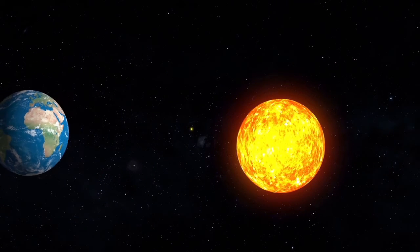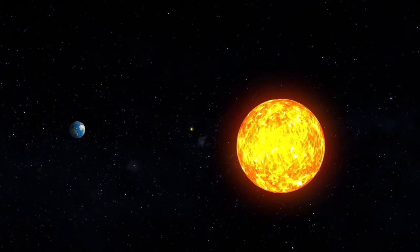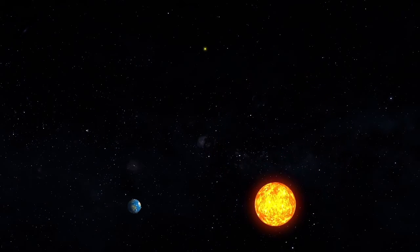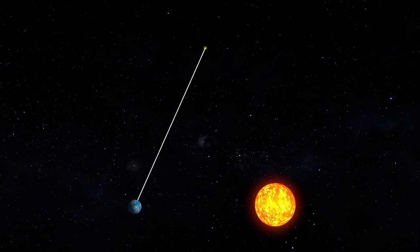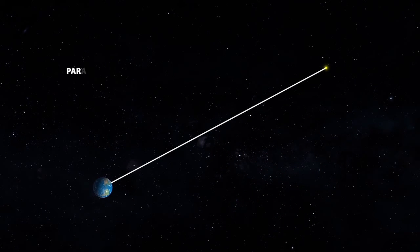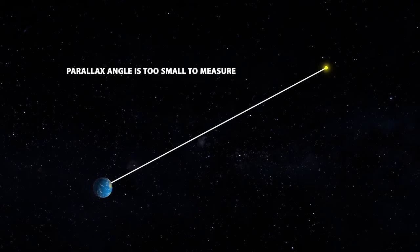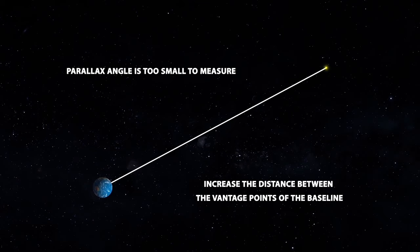Stars are astronomically far away from the Earth. As the distance to a star increases, the parallax decreases. Astronomers know that if the parallax angle is too small to measure because the object is too far away, they have to increase the distance between the vantage points of the baseline.